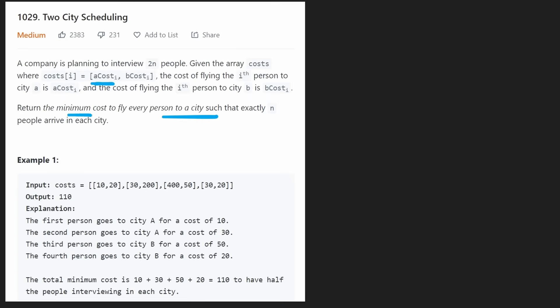When you see minimum cost, the first thing you might think of is to choose the minimum of the two values. Take 10, the minimum; take 30, the minimum again; take 50; and choose 20. The first example is a little bit misleading because you can just take the minimum of each pair and get the solution. Notice how two people went to city A and two people went to city B.